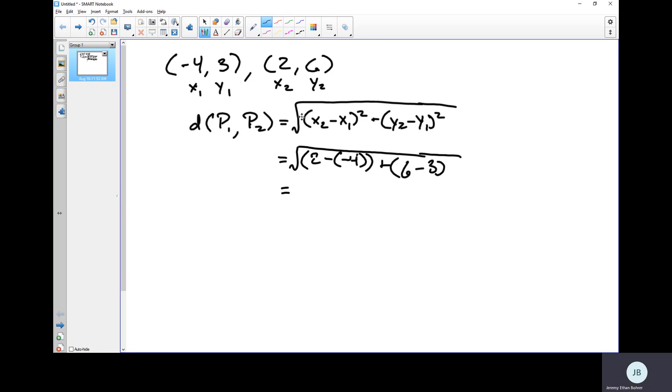So now I take 2 minus negative 4, which is the same as 2 plus 4, so that's 6. Plus 6 minus 3 is 3. I'm sorry, we're squaring these, I forgot to do that. So that's 6² plus 3², which is the square root of 36 plus 9, which equals the square root of 45.